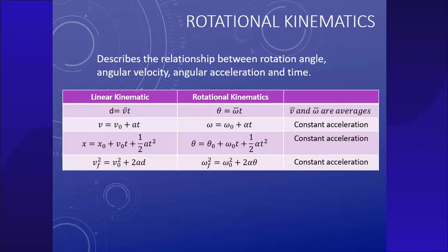Here's a nice little list. We've got the equation for distance and then the compared equation for angle. For both of those, remember you have to have the average values of either the linear or angular velocity.